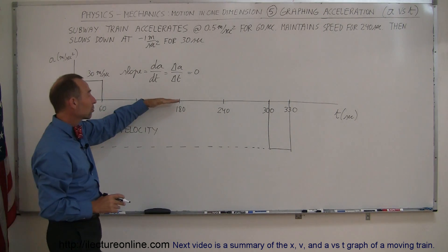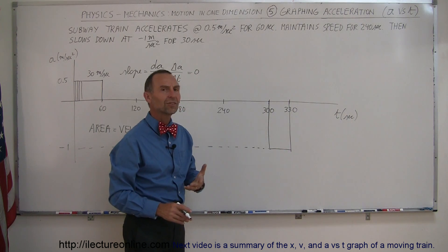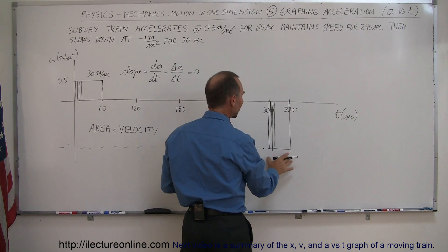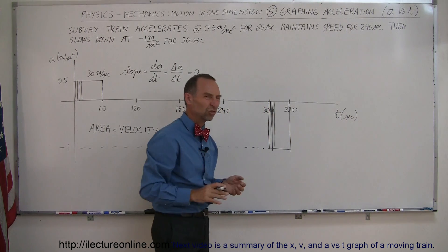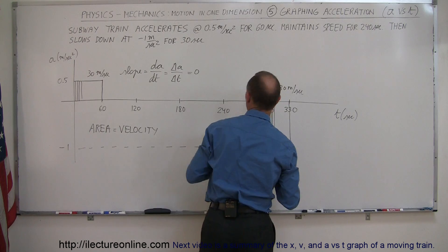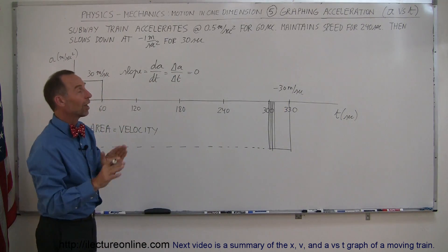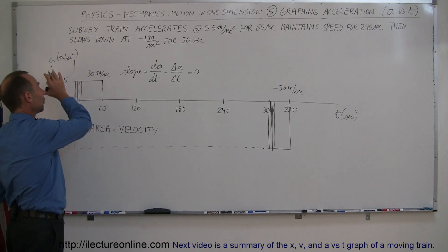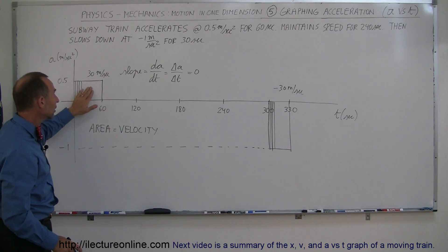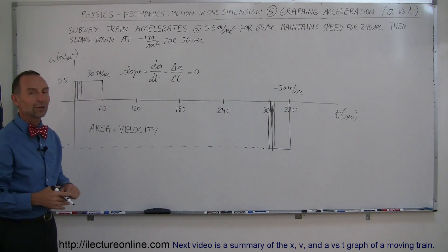Since we're not adding or subtracting any area from there to there, the velocity doesn't change — it stays at 30 meters per second. Then we have negative area, meaning the velocity is decreasing. As time goes by, we have more and more negative area, so the velocity becomes less and less. The area here would be 30 times negative 1, or minus 30 meters per second. That means we go from 30 meters per second back to zero. When we add the positive area, the zero area, and the negative area together, the net area is zero — meaning the train is standing still again at the end of 330 seconds.